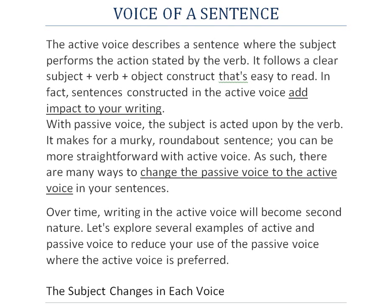Moving further about today's topic, which is voice of a sentence. Basically, in a sentence there can be either two types of voices: active or passive. Active voice describes a sentence where the subject performs the action started by the verb. It follows a clear subject plus verb plus object construct that's very easy to read. In fact, sentences constructed in the active voice add impact to your writing. If you are confused about how we find the subject in our sentence...